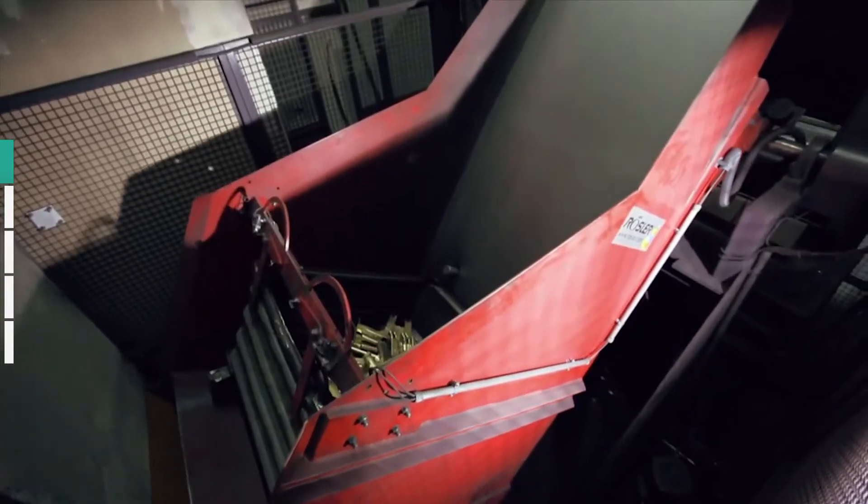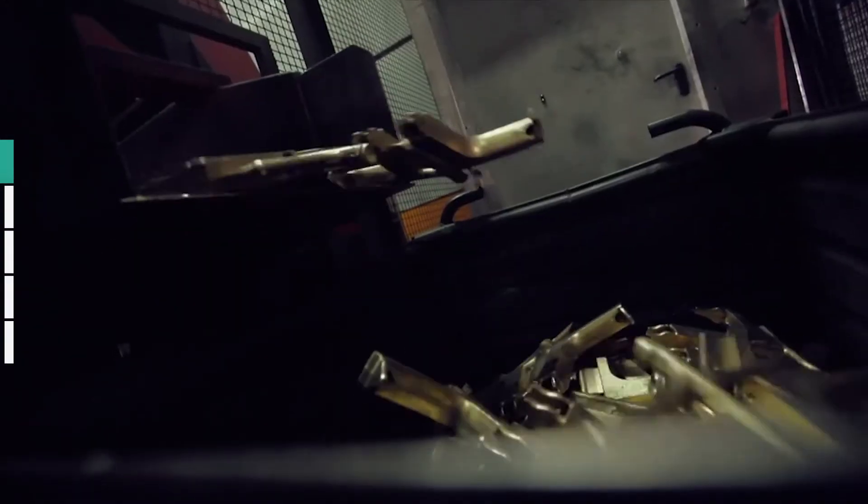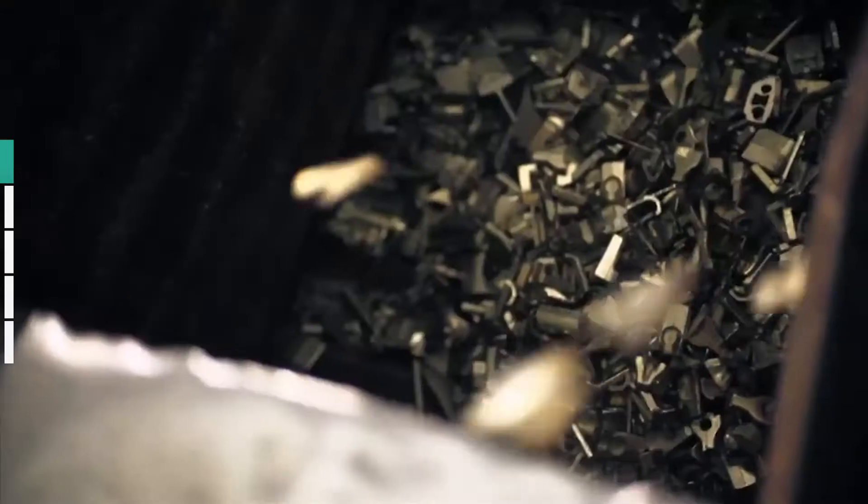In this giant washing machine, the sand residues are shaken out. Once the quartz sand has fulfilled its purpose, it is recycled and reused for road construction. Even the sprues and ridges are leftovers that can be sawn off and re-melted.